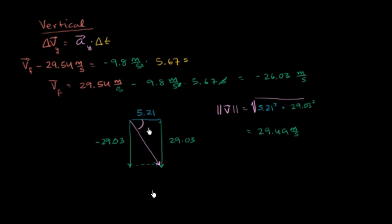We figured out that the vertical component of our velocity earlier in the video is negative 26.03 meters per second. But then I somehow, something happened in my brain, and it became negative 29.03. So this is not negative 29.03. This is negative 26.03 meters per second.